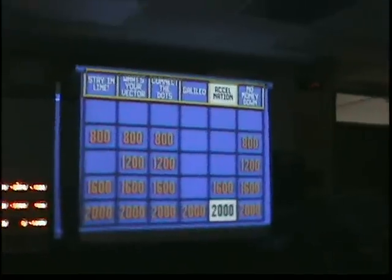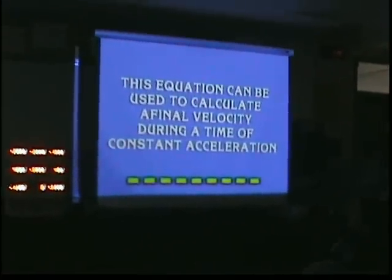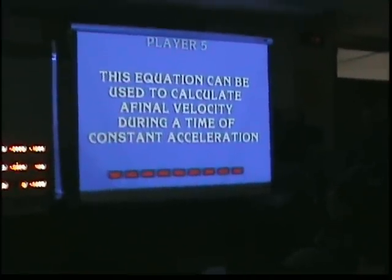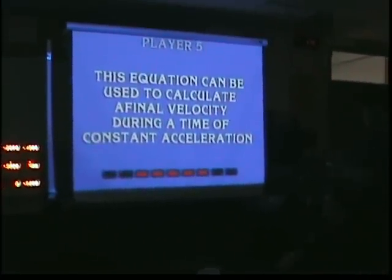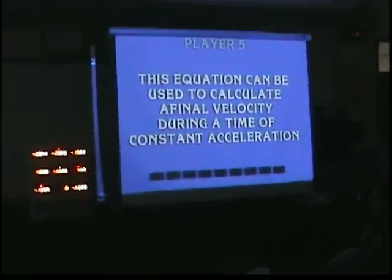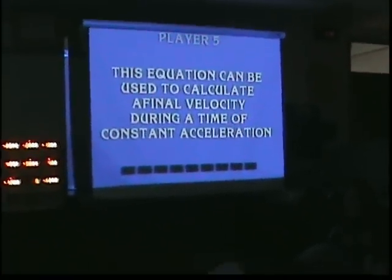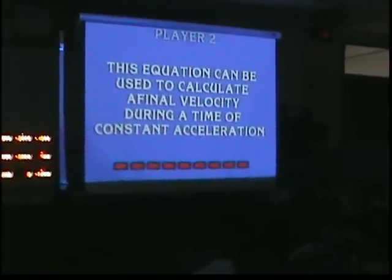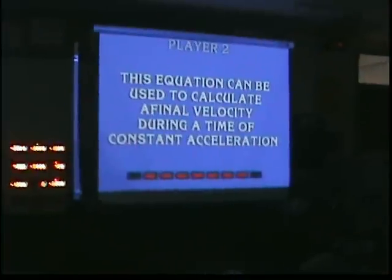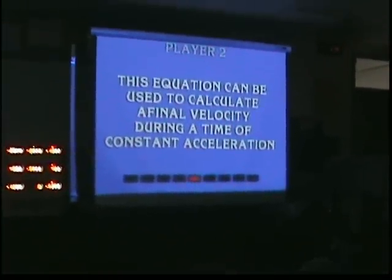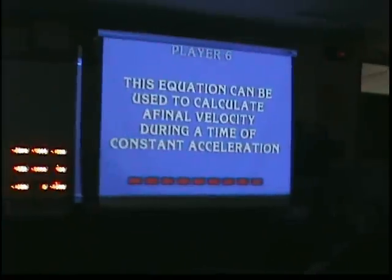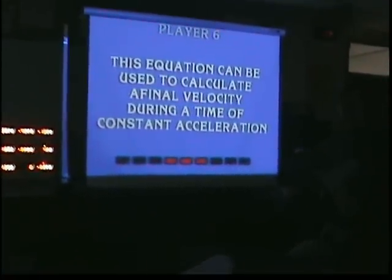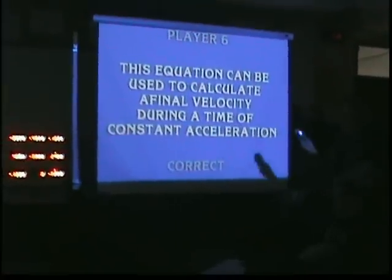For 2,000, you guys have ten minutes. Player five — A, B, T. Incorrect, but very close. VF equals VI plus AT — excellent, that is correct!